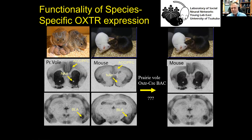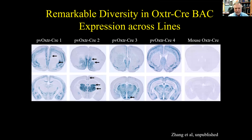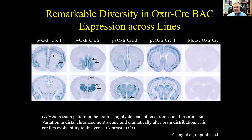We did that — we created these mice. We came out with about seven or eight different lines and none were a perfect match to the vole. But each different line had some aspects of the vole: one showed a prairie vole prefrontal cortex pattern, another had nucleus accumbens expression. Each line was very different in expression. This doesn't normally happen with BAC transgenics, which usually give faithful expression. It tells us something about this gene — depending on where it inserts in the mouse genome, it had a totally different expression pattern.